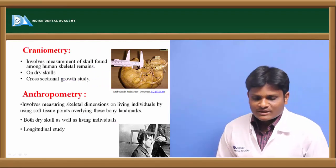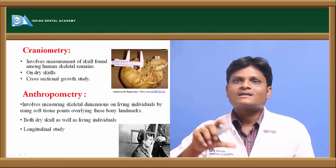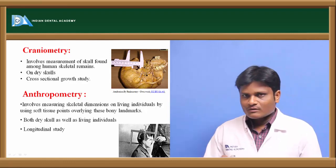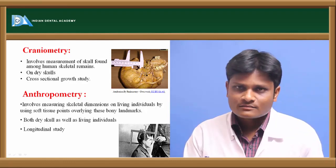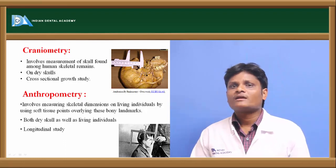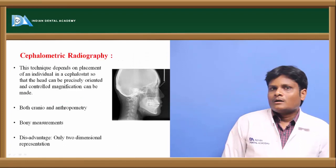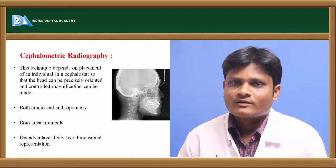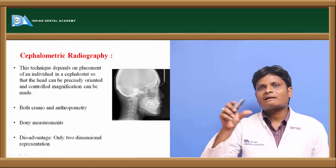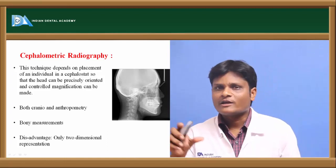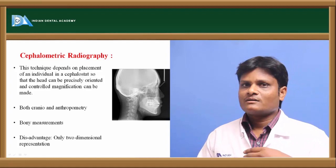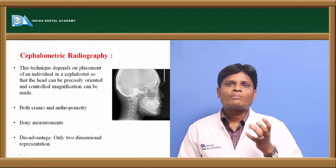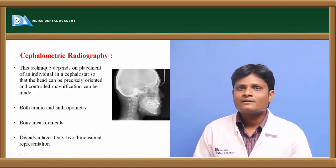Craniometry is the measurement of parameters on the skull remains of human beings. Anthropometry is the measurement of parameters directly on living beings to study growth. Cephalometry uses radiographic methods — by taking lateral cephalograms (cephalometric radiographs) at different periods of time, we can identify landmarks on the craniofacial skeleton and assess the growth pattern and growth amount occurring in an individual.